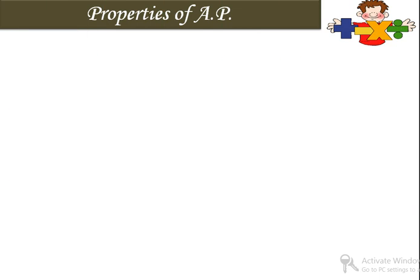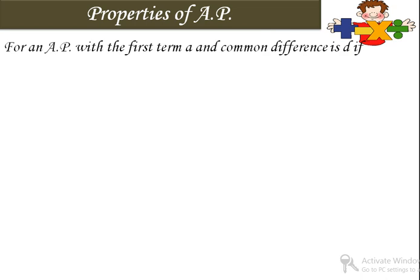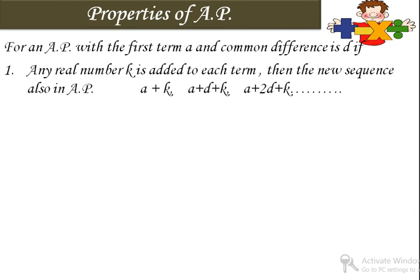So what are the properties? For an AP with the first term A and a common difference D, if any real number K is added to each term, then the new sequence will also be in AP. For example, consider the AP: 2, 4, 6, 8, 10.